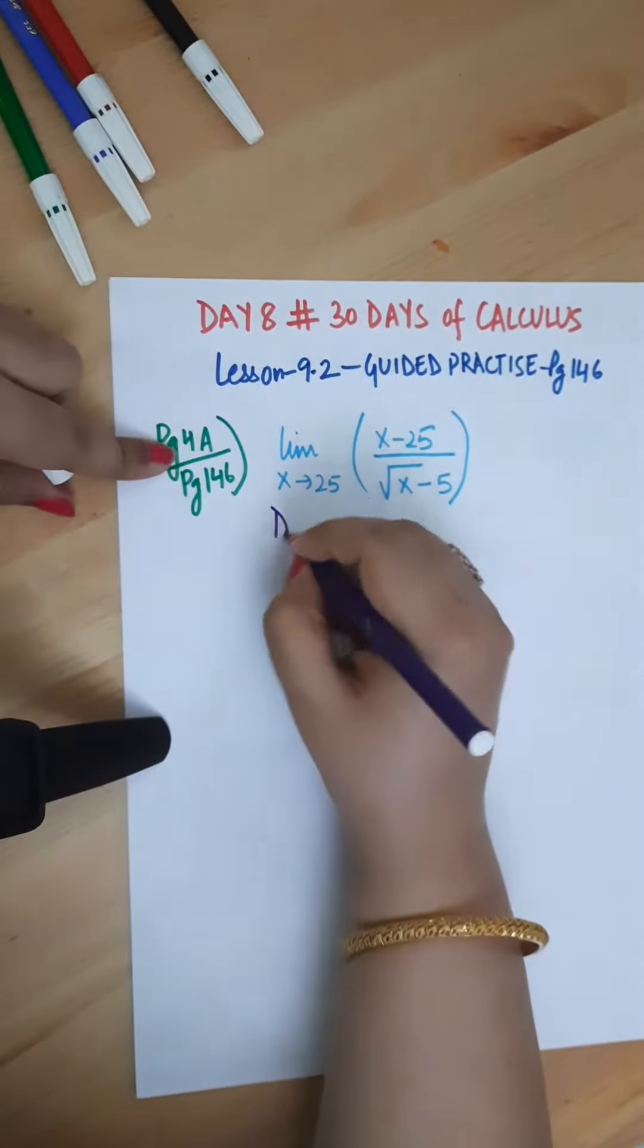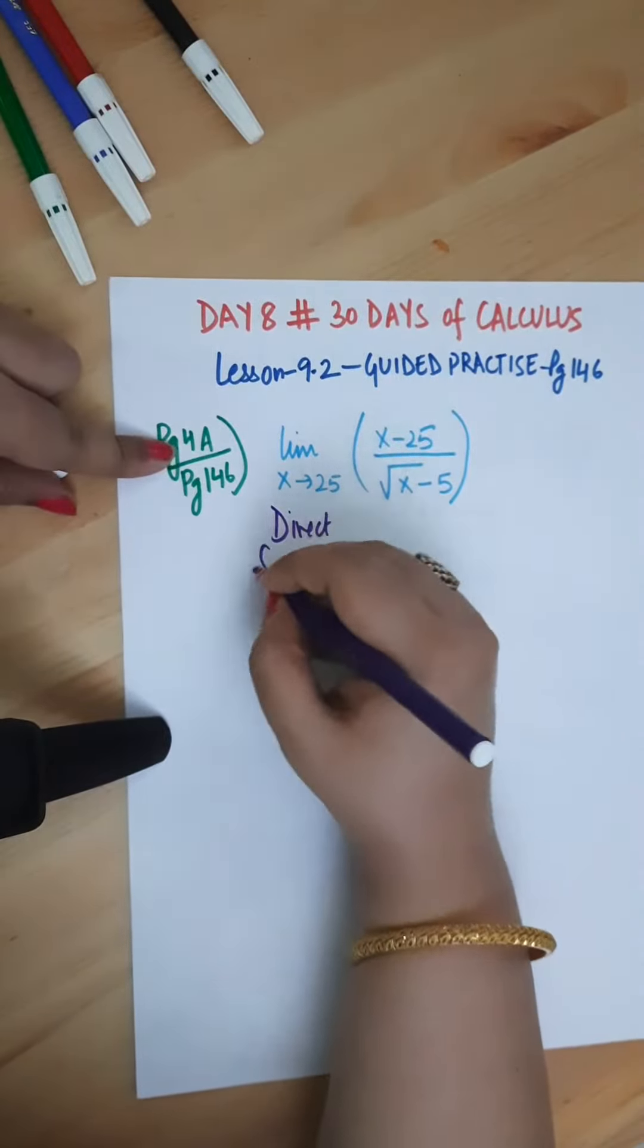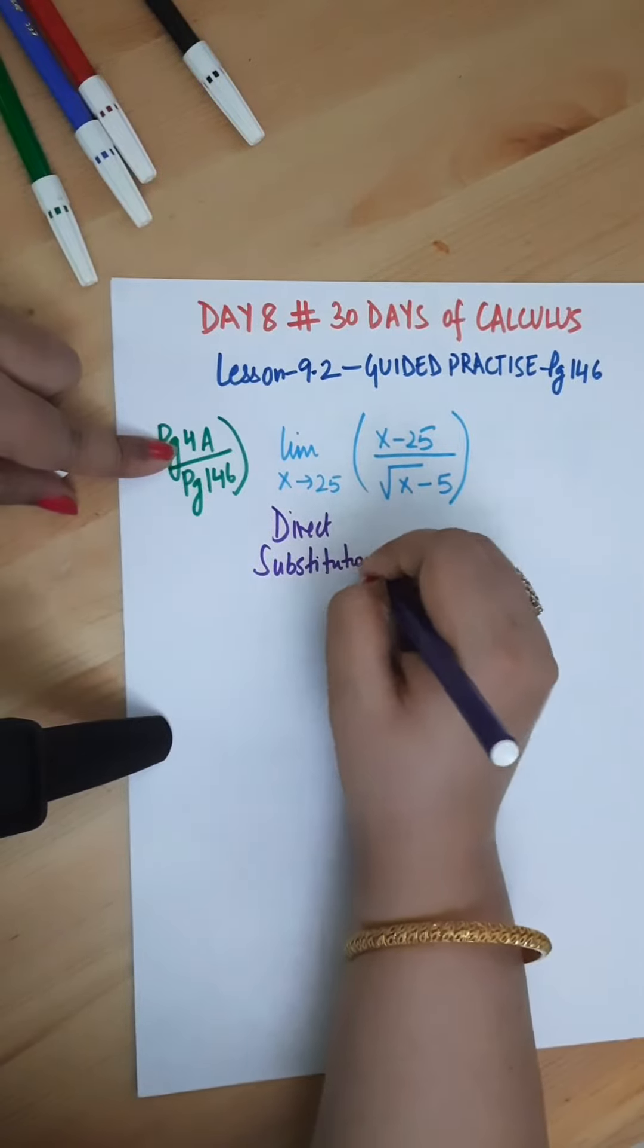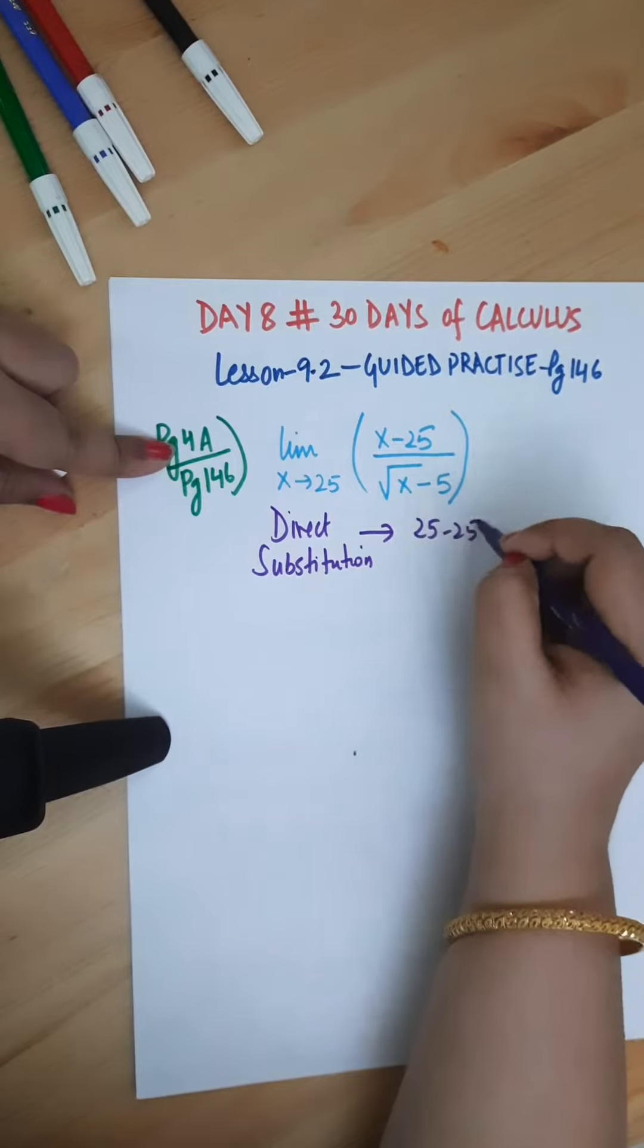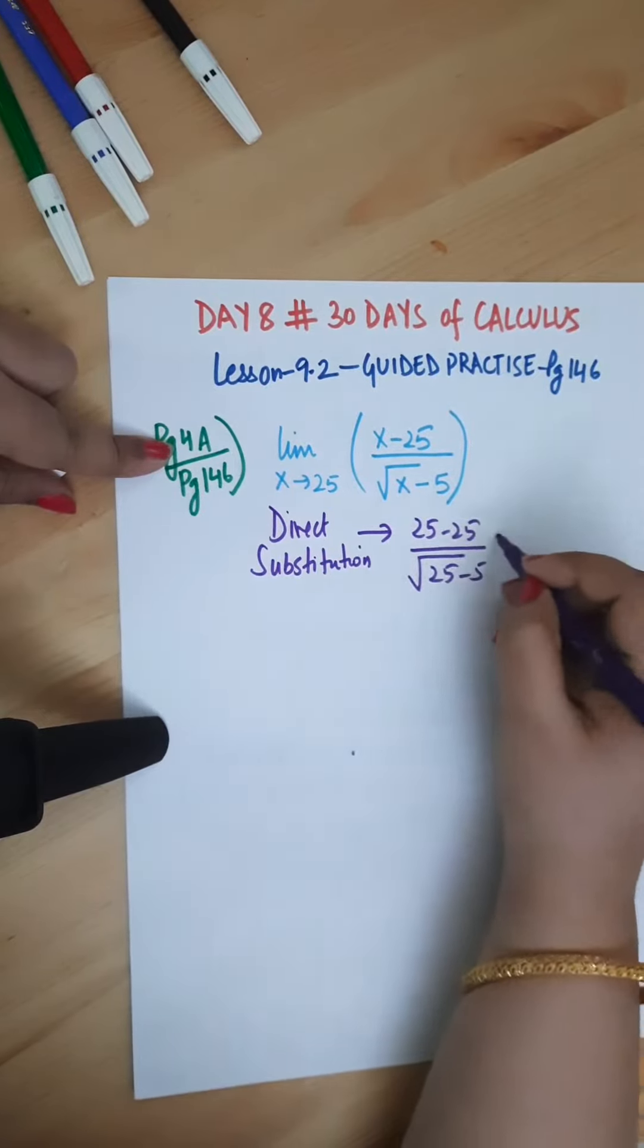Now here, this is a different kind of problem because you see the radical sign in the denominator. And even if we try to do direct substitution it fails because it gives us 0 divided by 0, which is the indeterminate form.